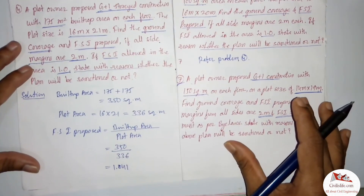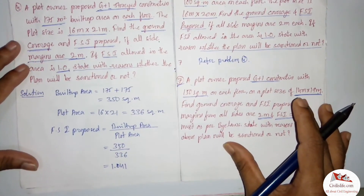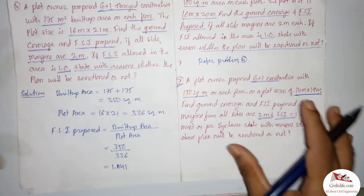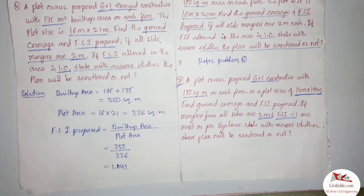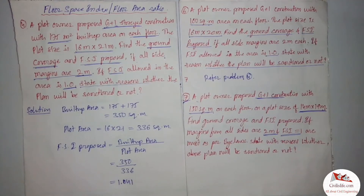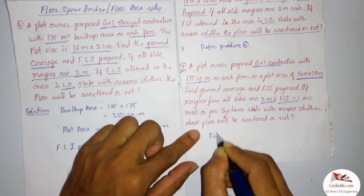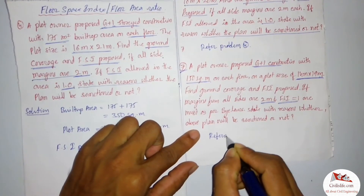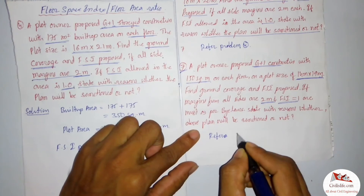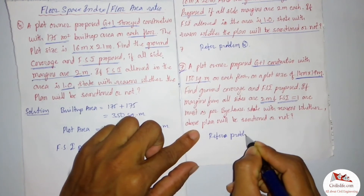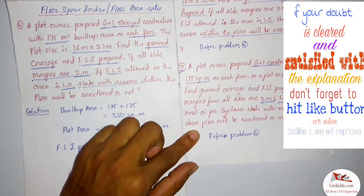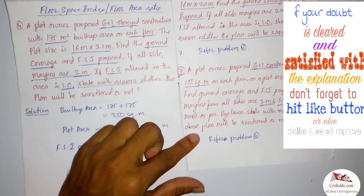As we can see, these questions are repeated — only the values differ. This type of question is very easy; we just need to practice. For question seven also, I am giving the reference of problem four — the link is provided in the description.